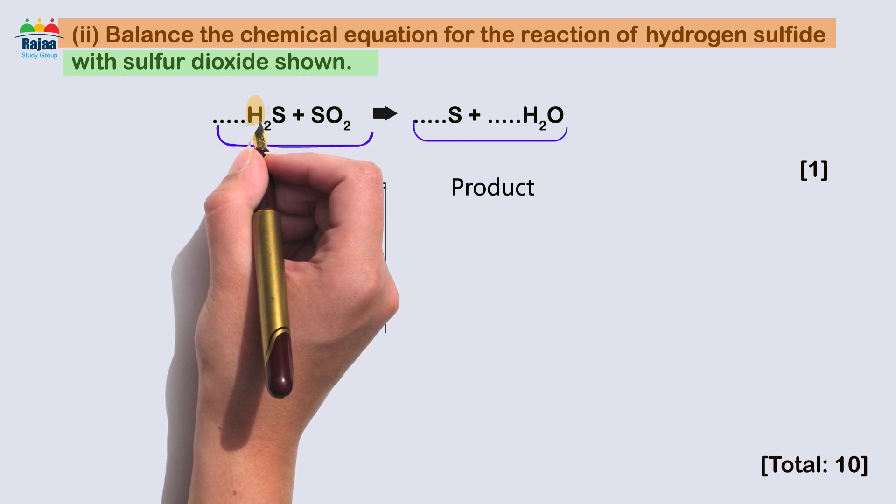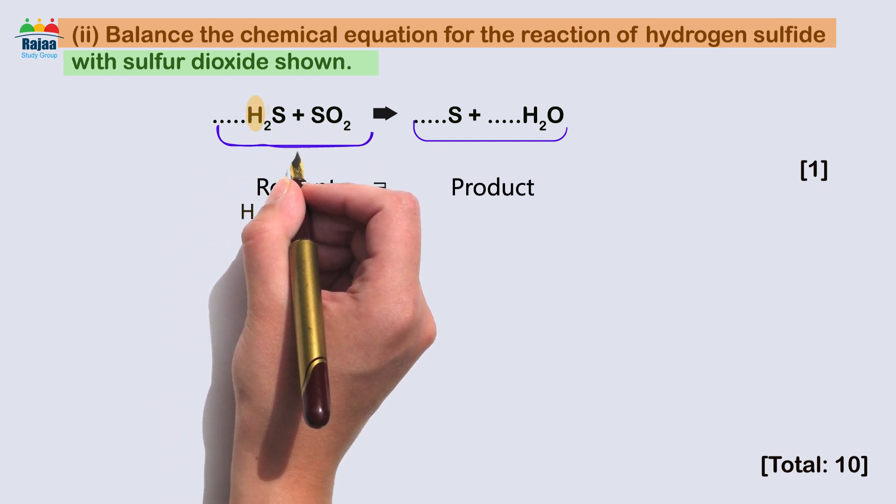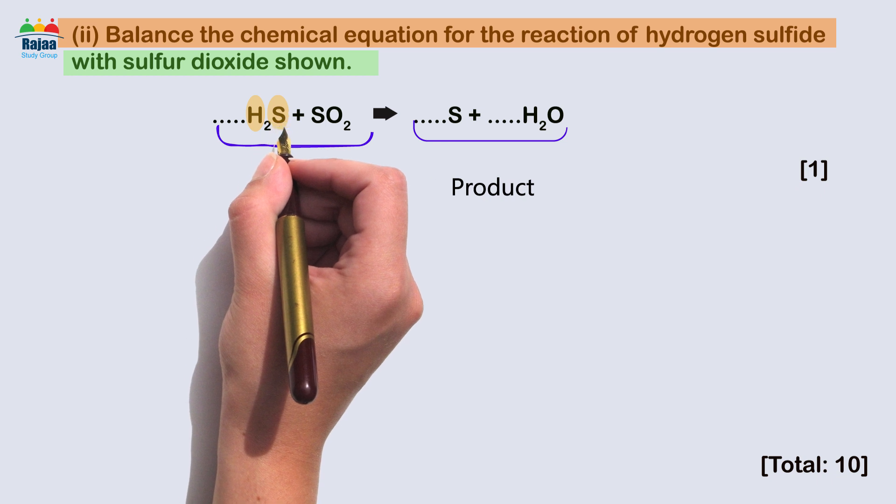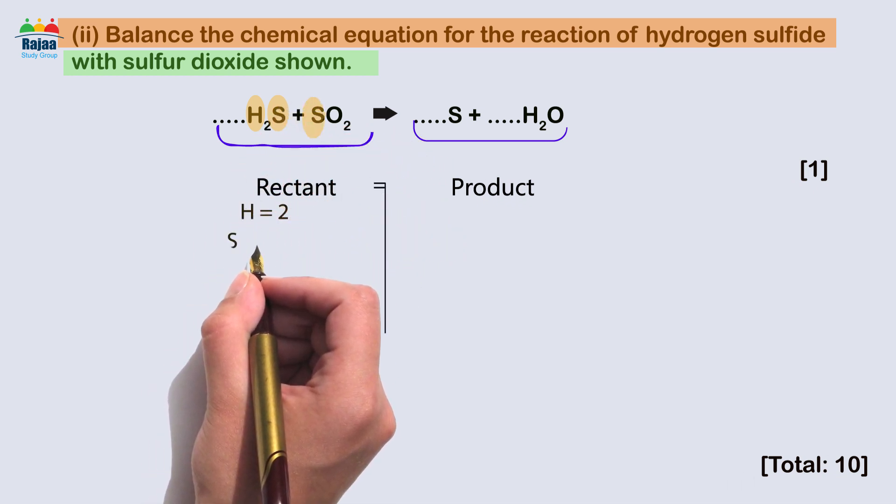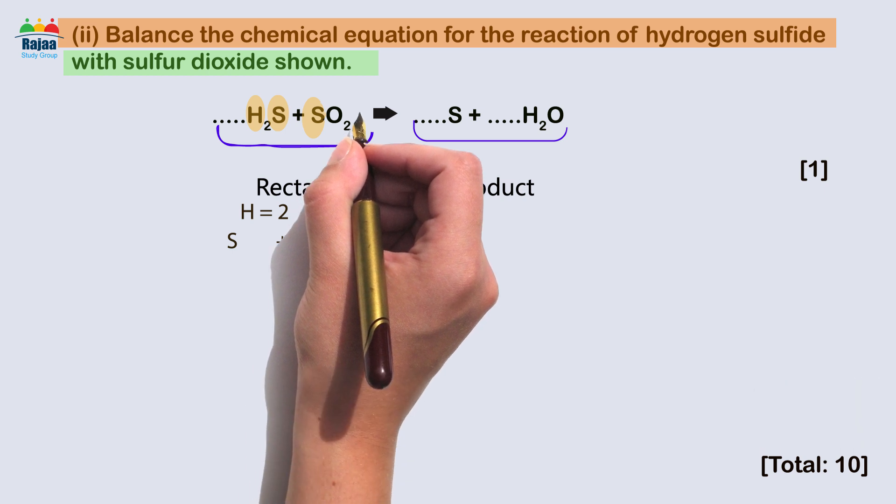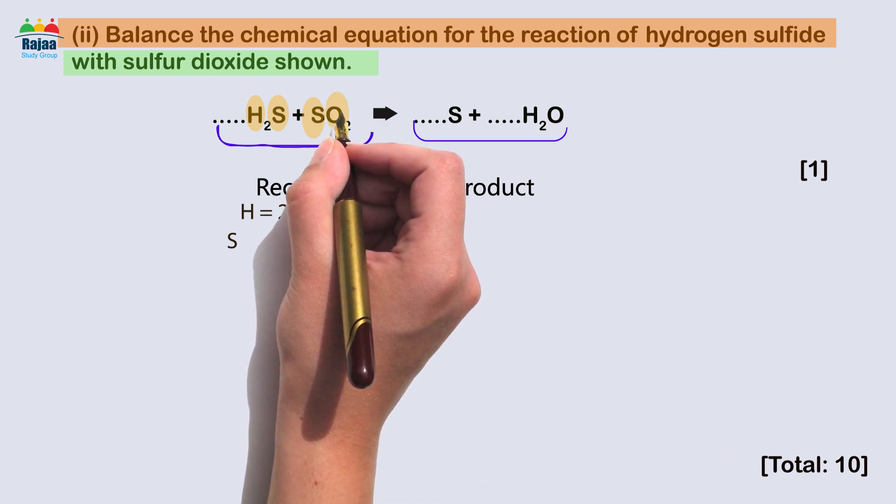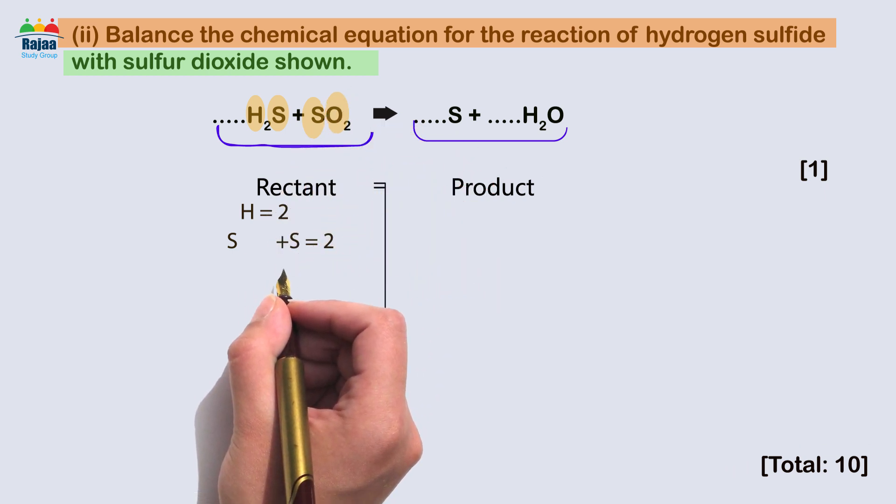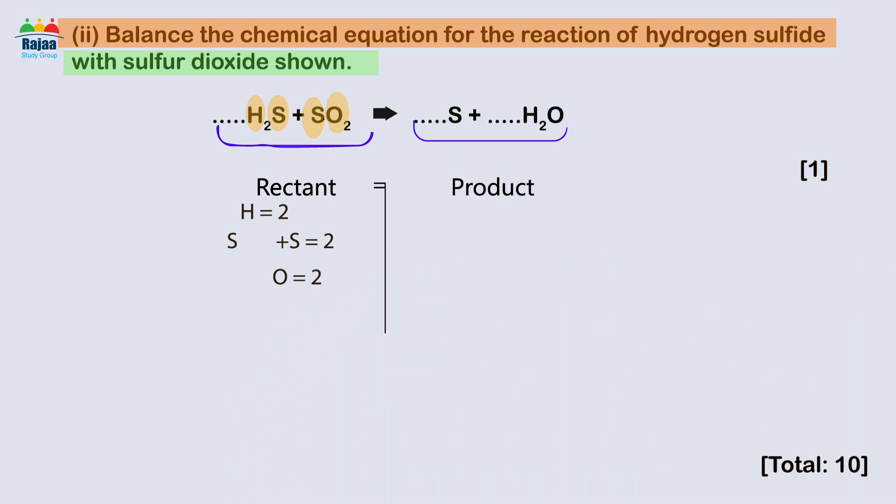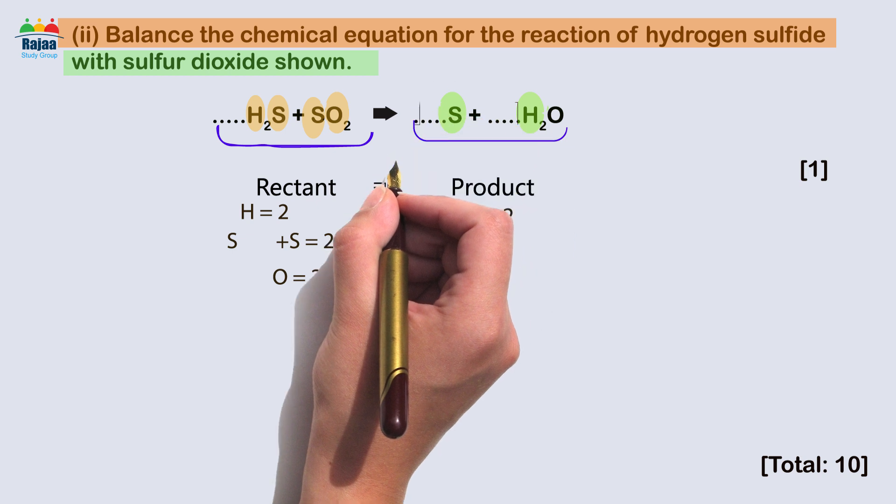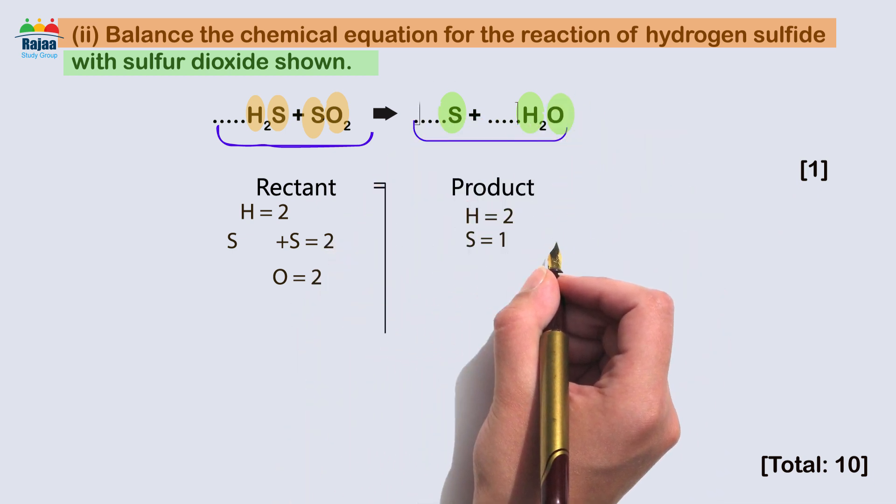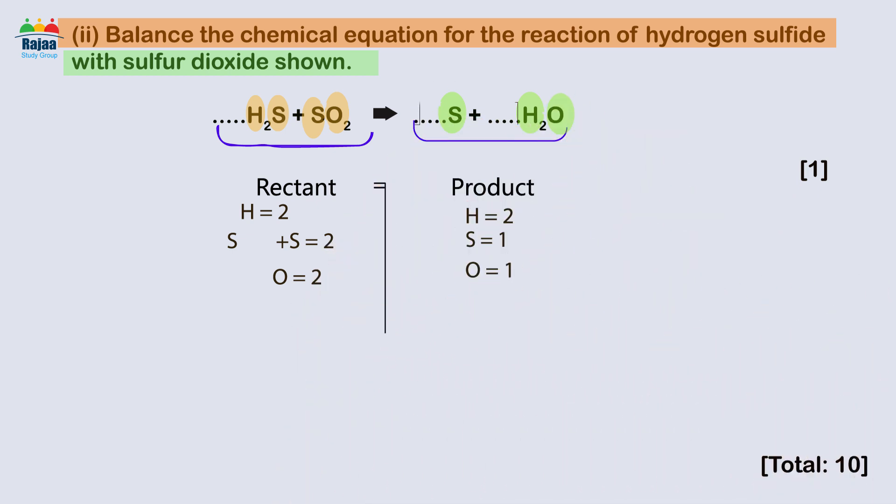Therefore, the number of atoms in the reactant side: there is two hydrogen on the reactant side. I have one plus one sulfur, and so there are two sulfur. Take care, you must count all of the sulfur in the reactant. In addition, there is two oxygen in reactant side. On the product side, I have two hydrogen, one sulfur, and one oxygen.